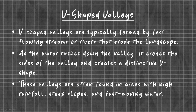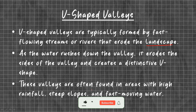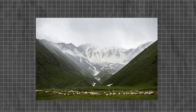V-shaped valleys are typically formed by fast-flowing streams or rivers that erode the landscape. As the water rushes down the valley, it erodes the sides and creates a distinctive V-shape. These valleys are often found in areas with high rainfall, steep slopes, and fast-flowing water. As you can see in this picture, it is a V-shaped valley with the mountains on either side.